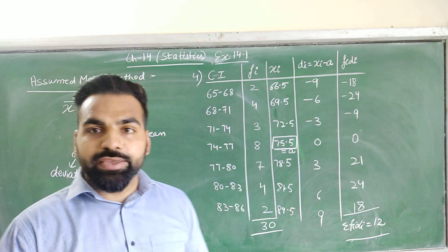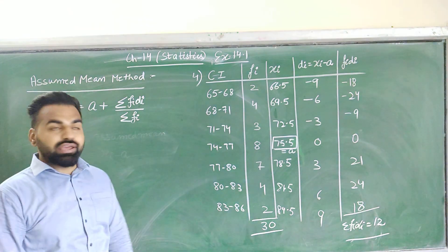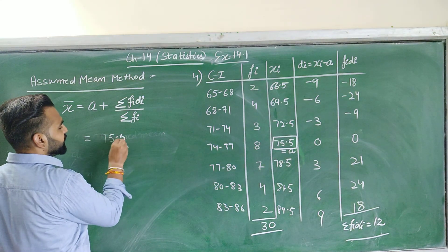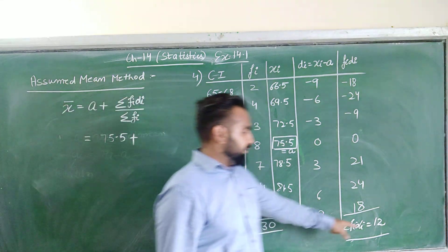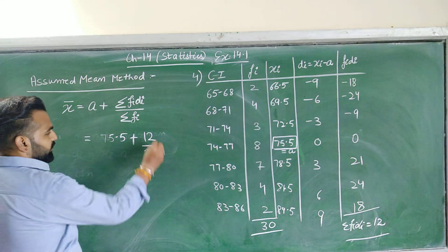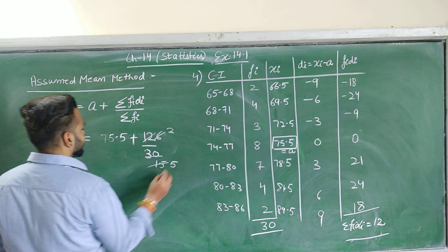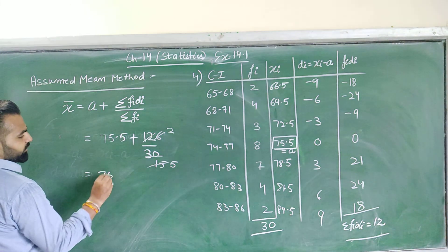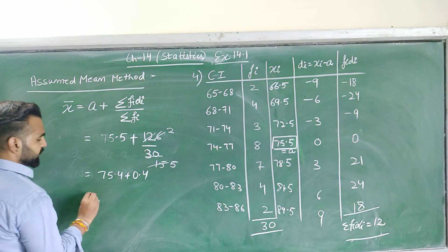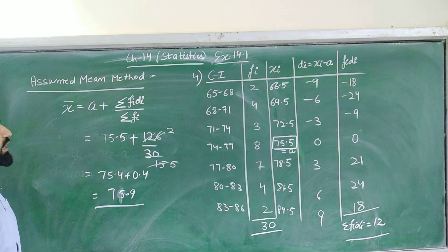Now we calculate the mean using the formula. Putting in the values: x̄ = a + Σfᵢdᵢ / Σfᵢ = 75.5 + 12/30 = 75.5 + 2/5 = 75.5 + 0.4 = 75.9. So the required mean by the assumed mean method is 75.9.